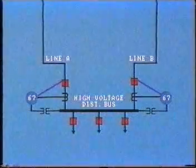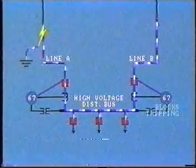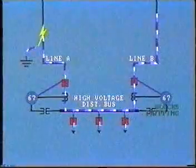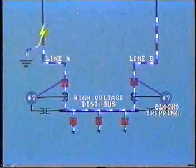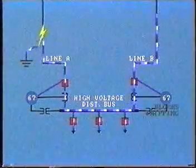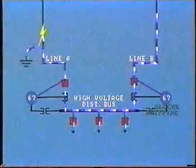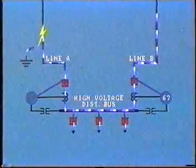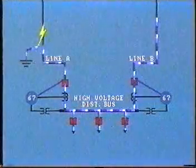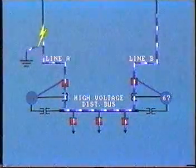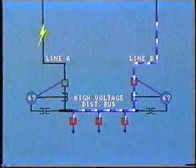With a line A fault, the directional element blocks the overcurrent relay on line B from tripping when current flow is into the bus. But it will allow operation of overcurrent relay A to trip when current flow is out of the bus.